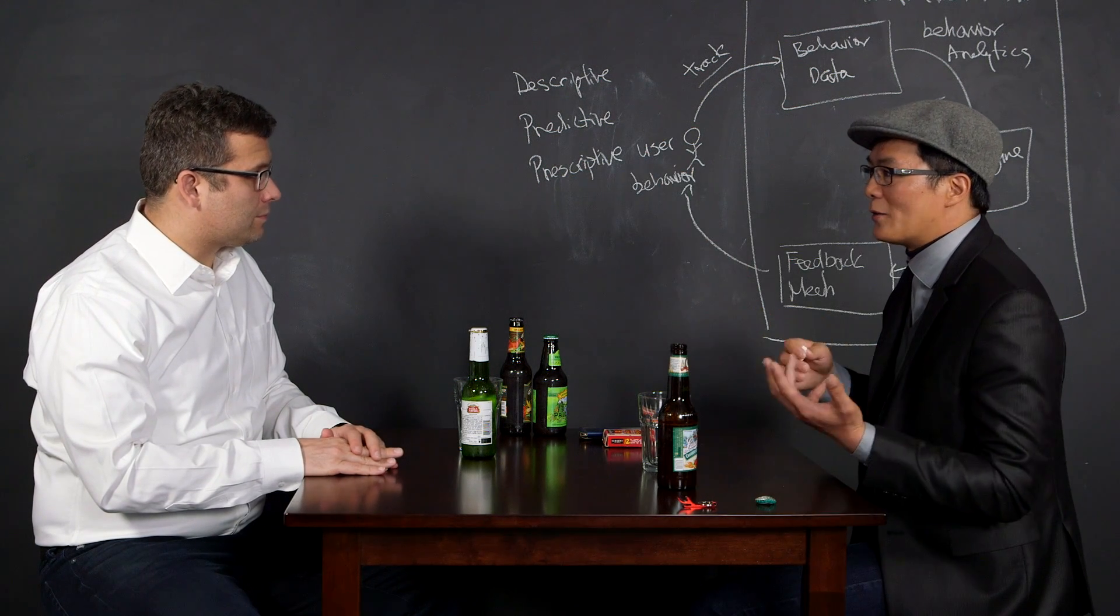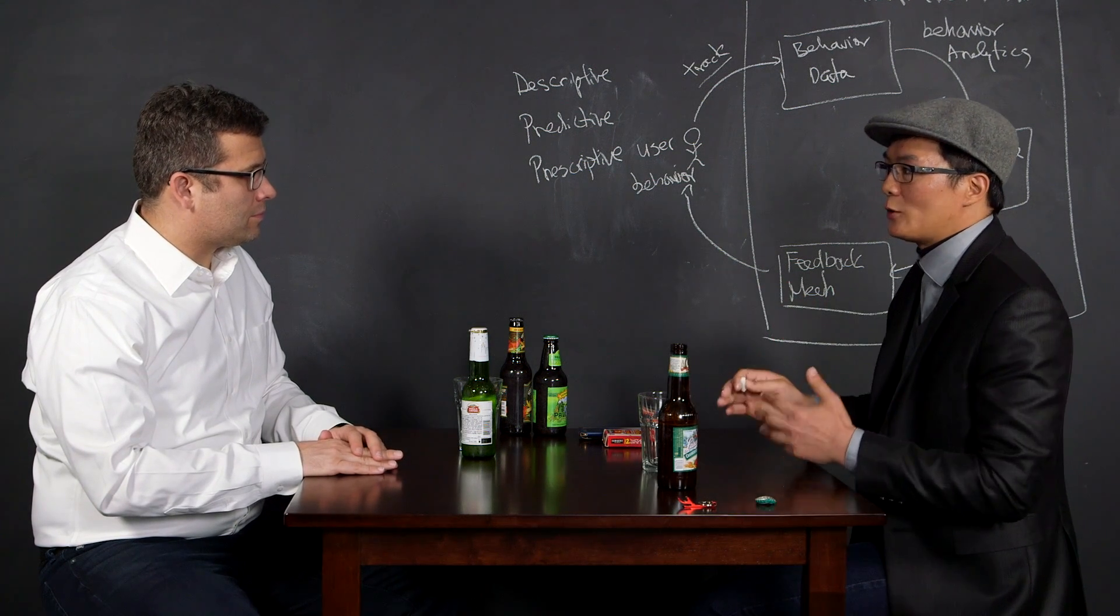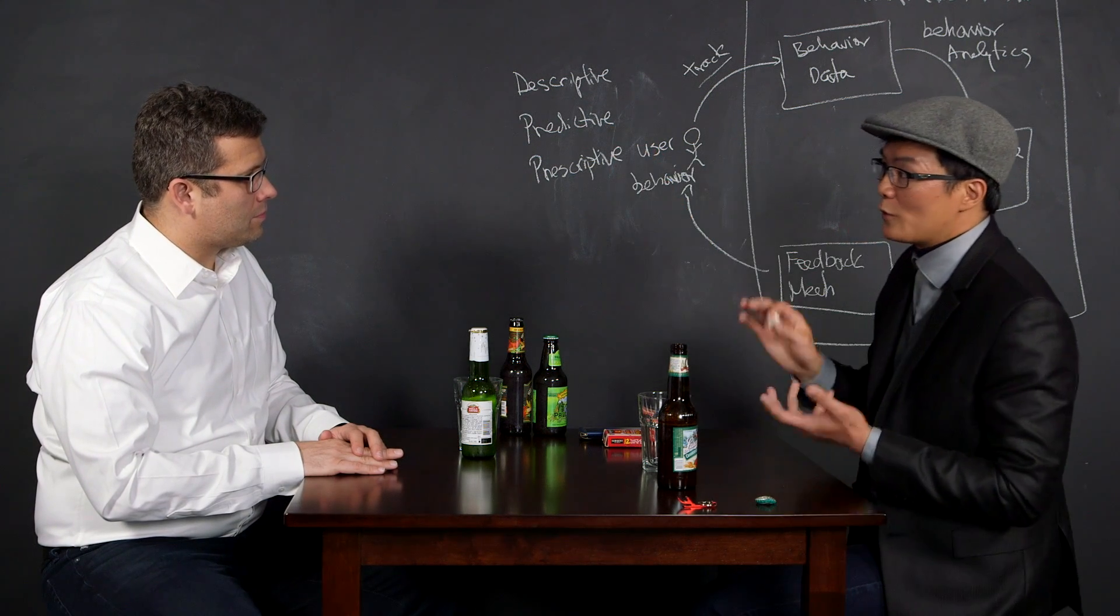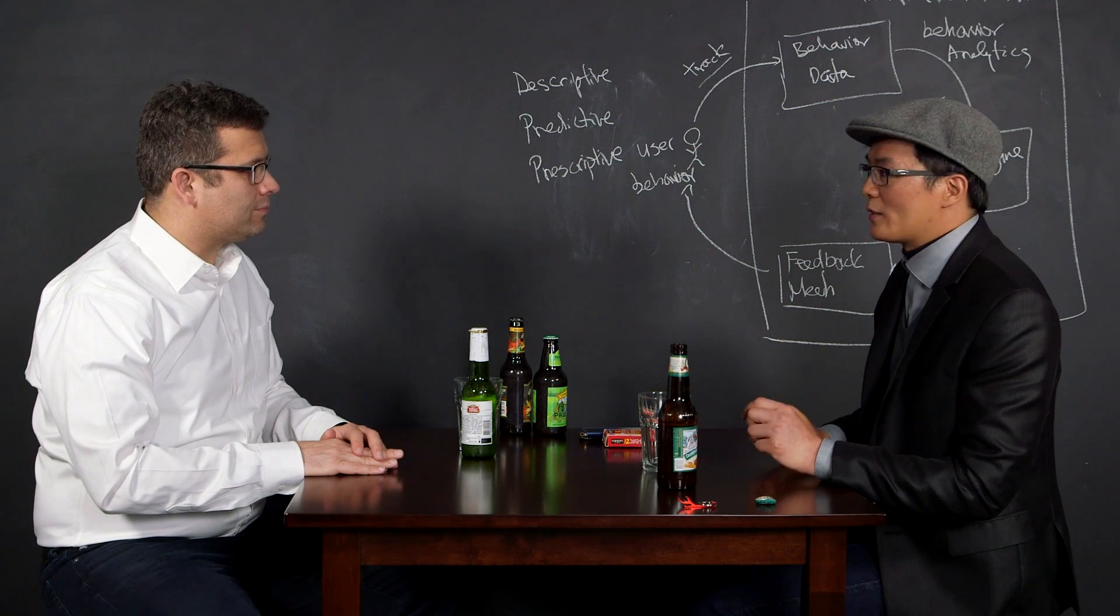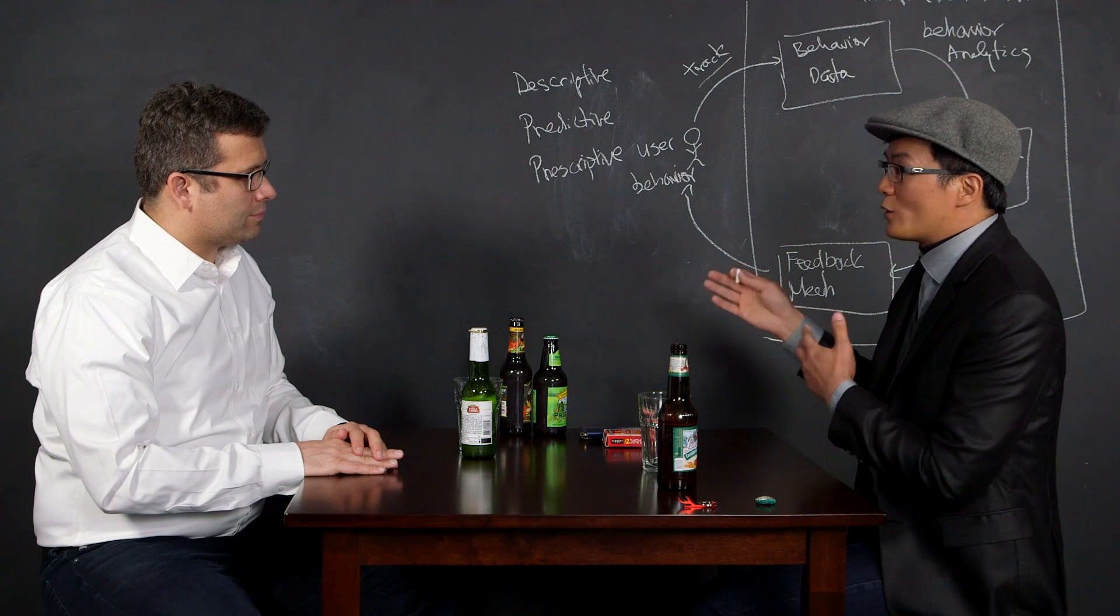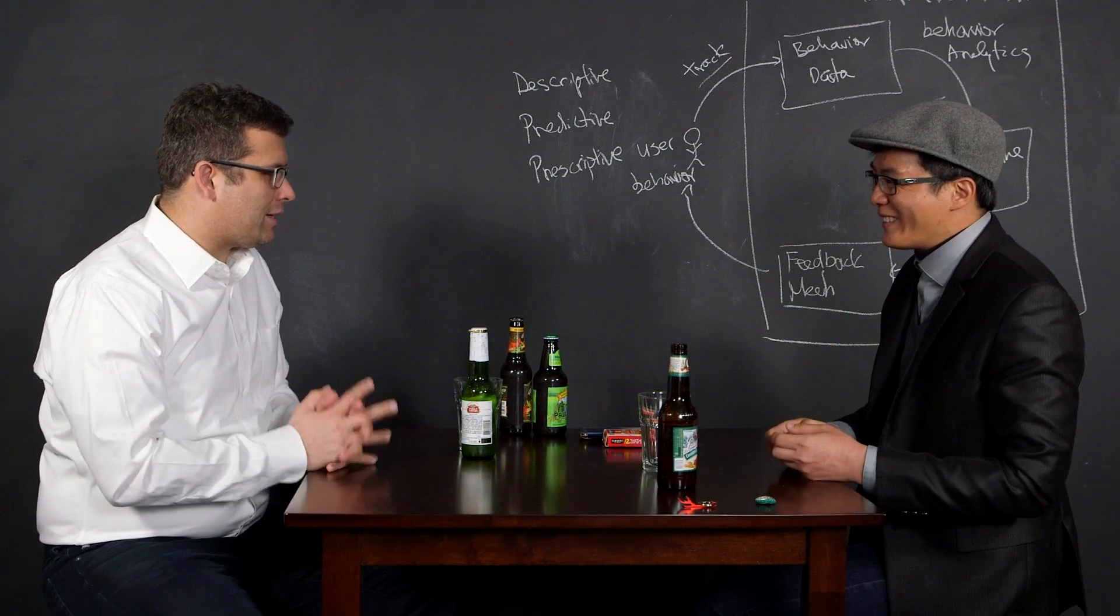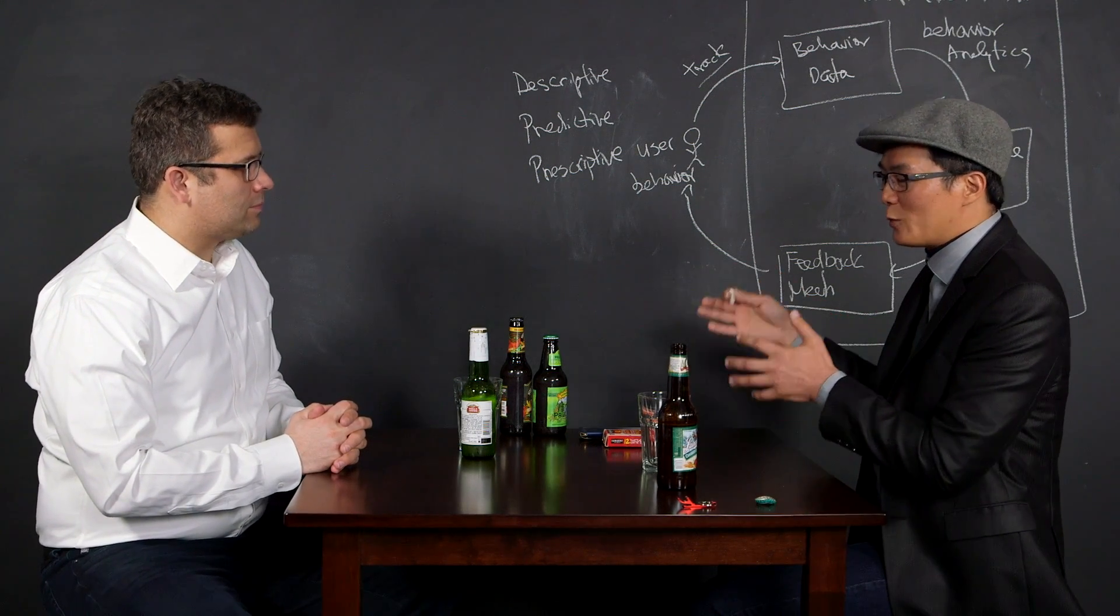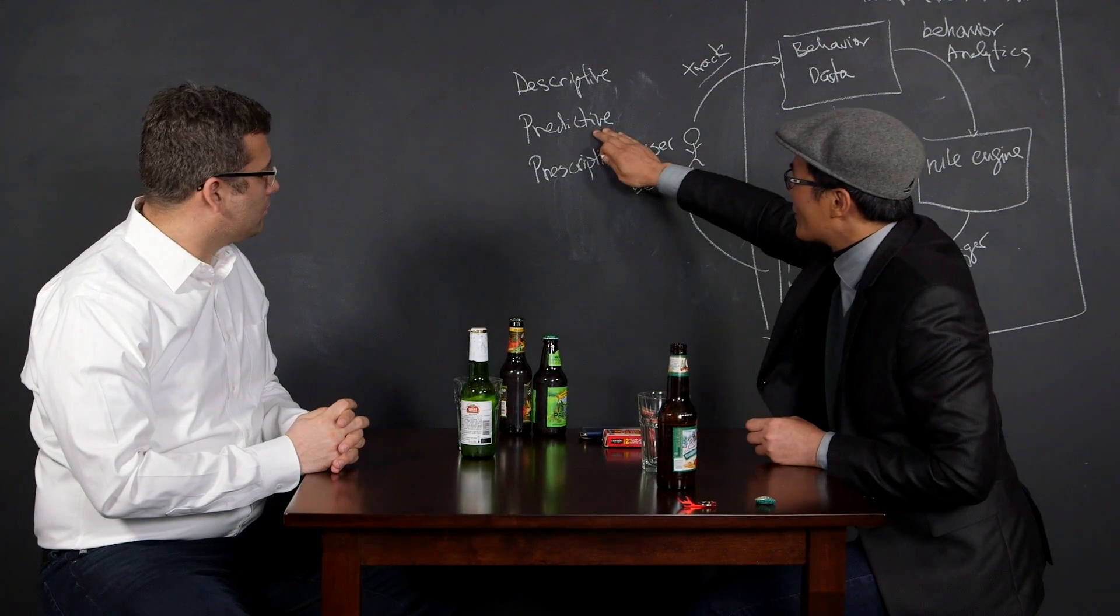So predictive analytics is actually all about using data that you have access to, to estimate data that you don't have. And so a lot of people think of predictive analytics as predicting the future, and that's actually only one very specific use case of predictive analytics. Basically it's a special case because the future data is data that you don't have, the historical data is data that you have. It's just time series data. So you're trying to use data that you have, which are historical data, to estimate future data that you can't have. So that's predictive analytics.